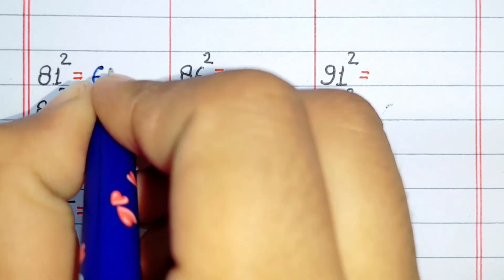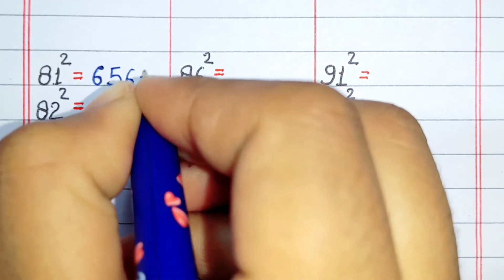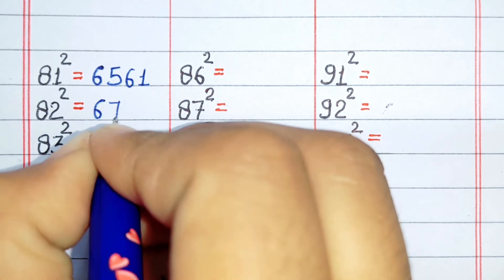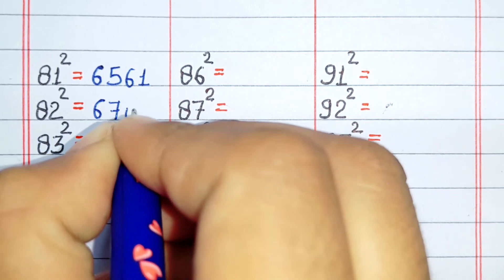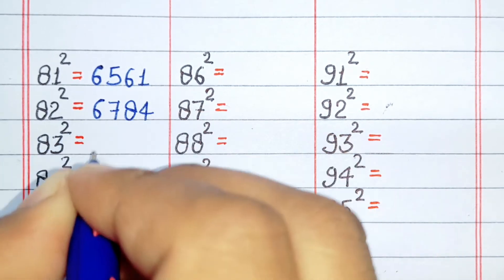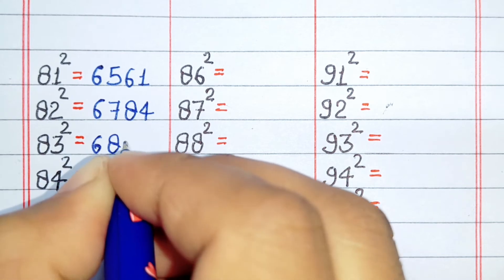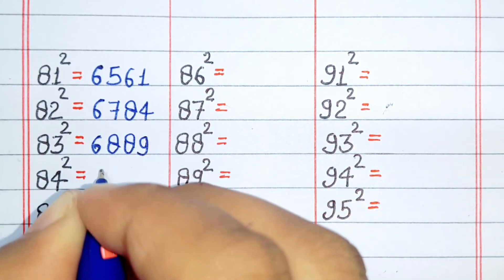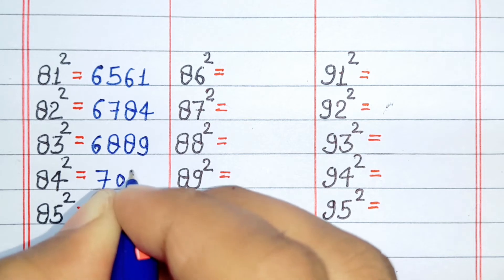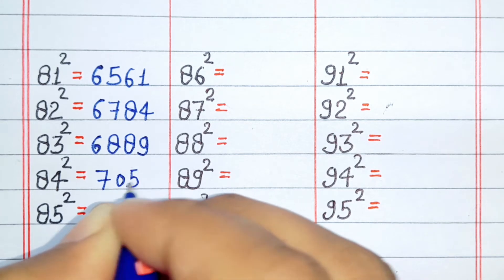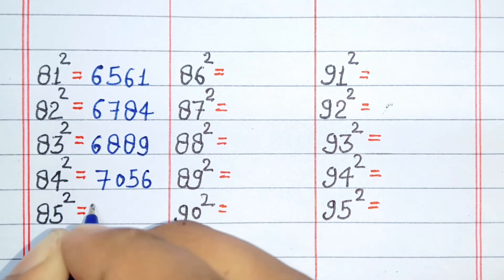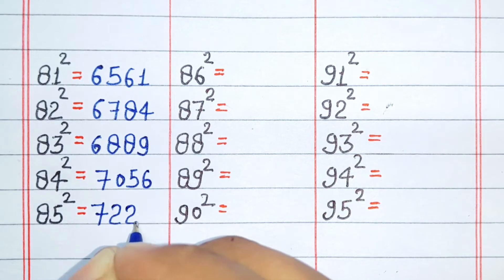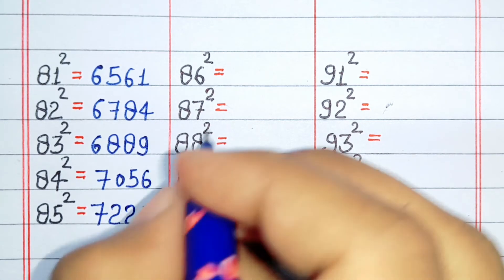Square of 79 is 6241. Square of 80 is 6400. Square of 84 is 7056. Square of 85 is 7225.